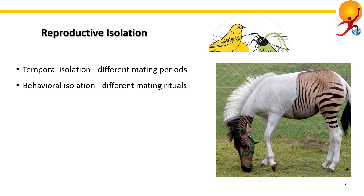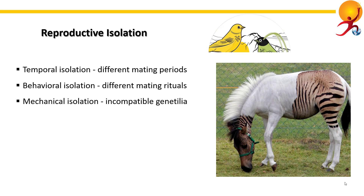Behavioral isolation — in some species, there are certain courtship displays and rituals needed for mating, including courtship calls, which might be very different for different species. Mechanical isolation is when mating is physically impossible because of incompatible genitalia. Such isolation is common in insects, whereby the genitalia works like lock and key.